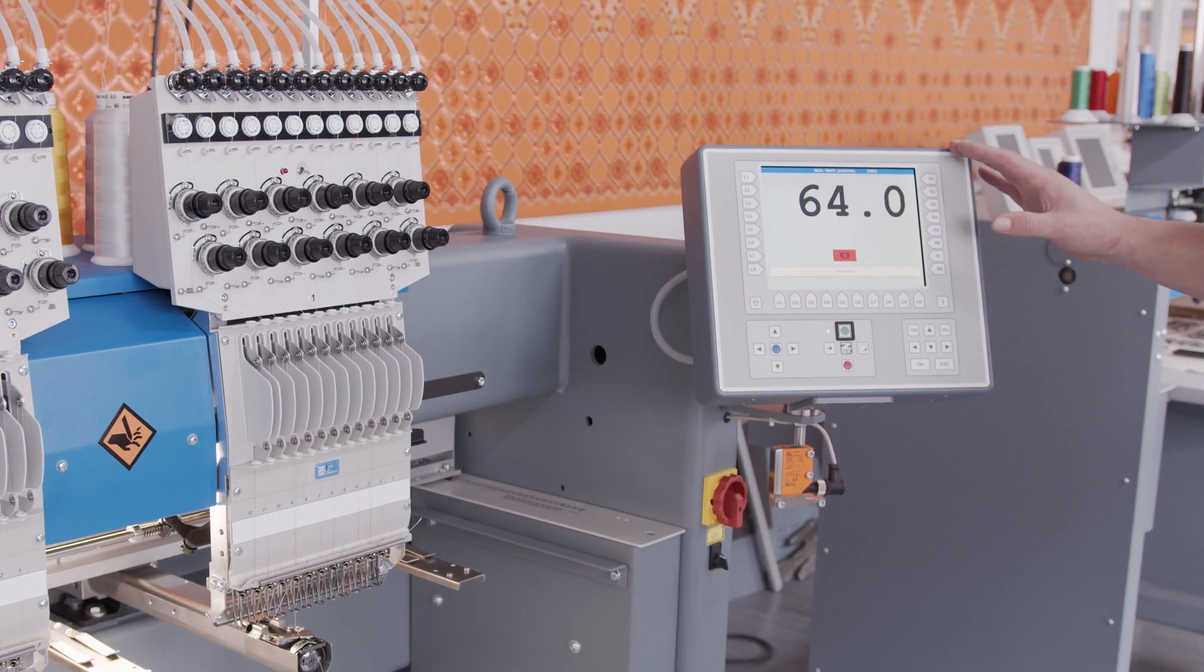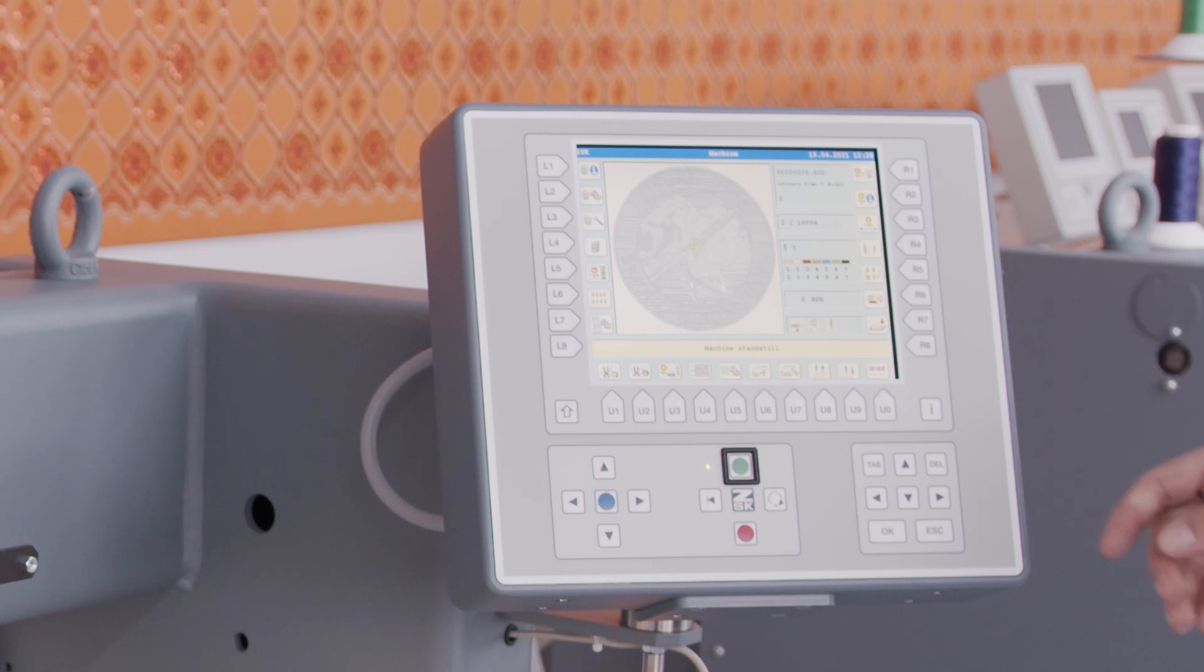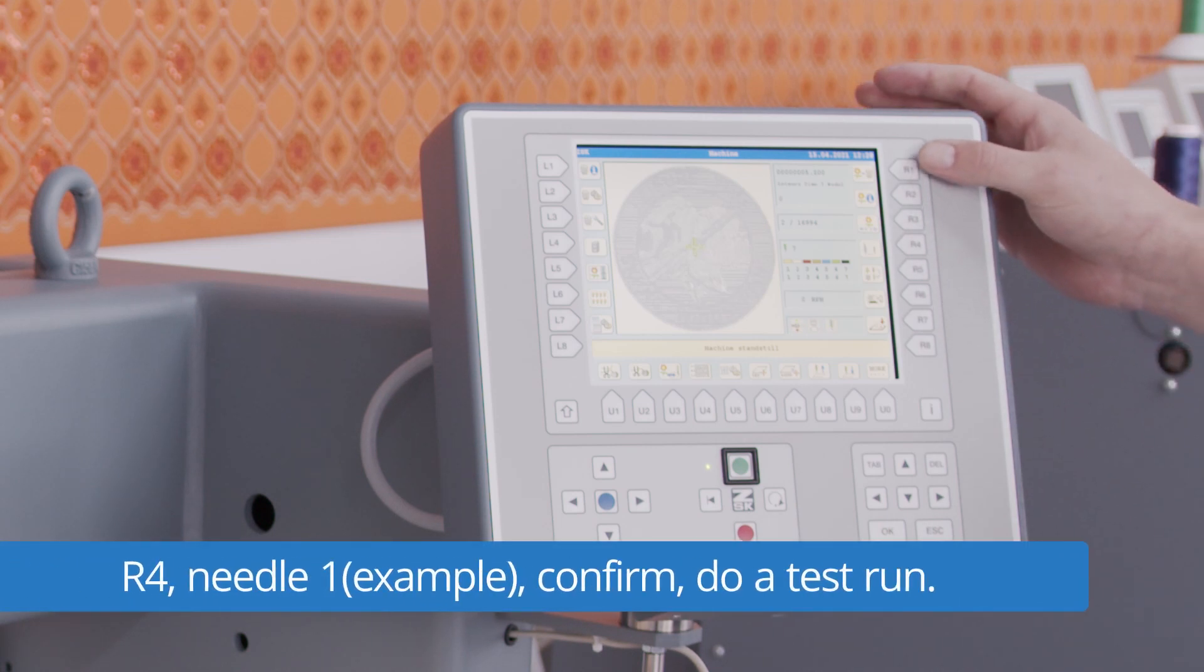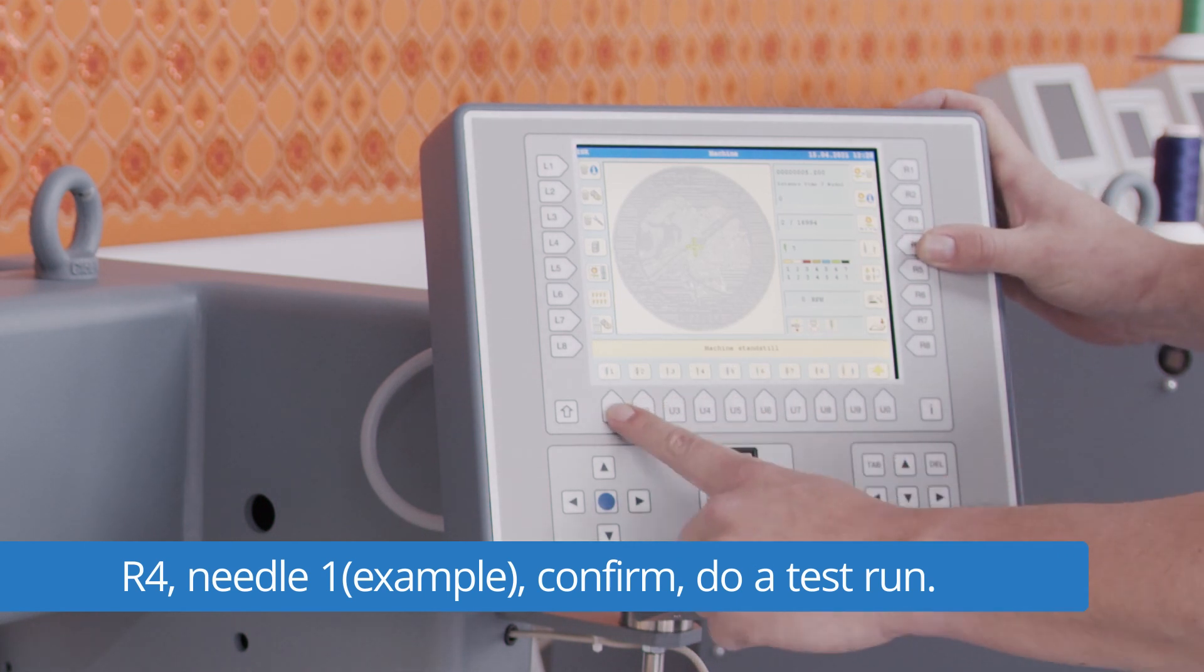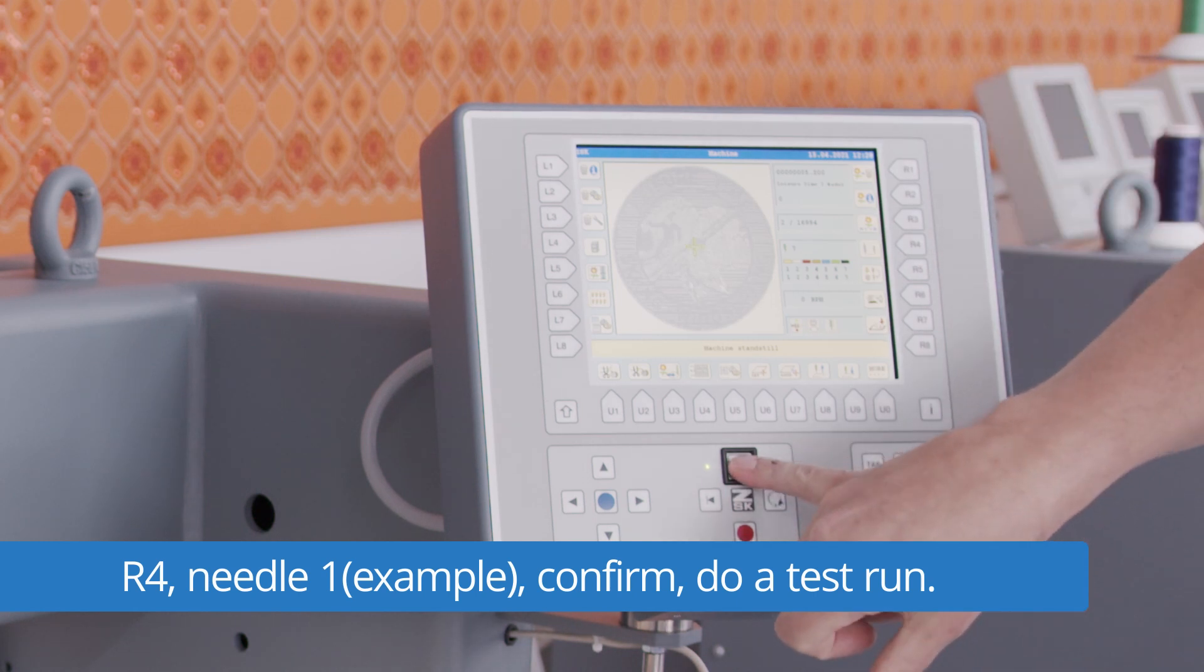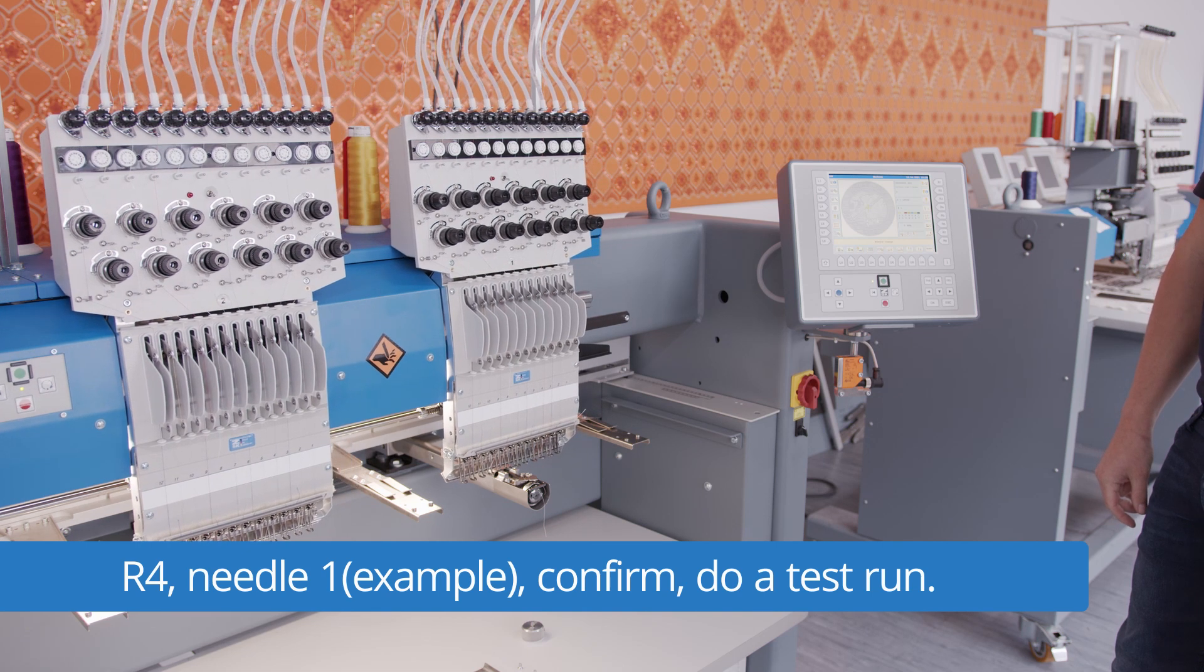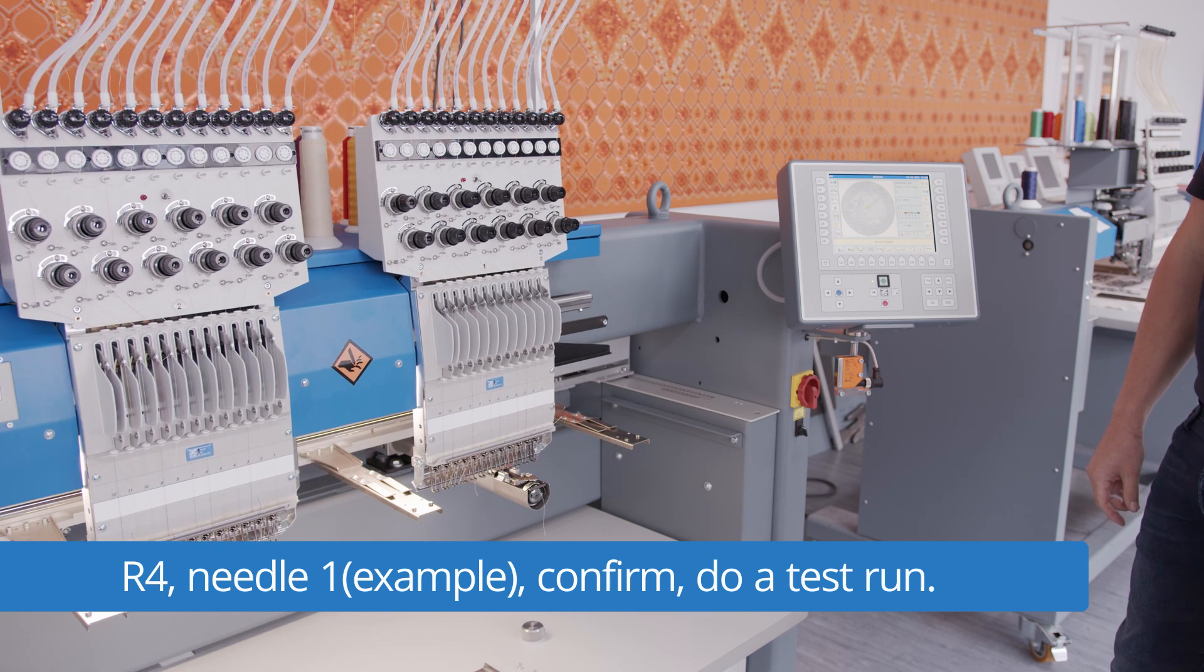After bringing back the machine to the stop position we have to quit the menus and go back to the main screen. Here we want to try now a needle change. Therefore we push R4. Choose any other needle. We are taking one for example and confirm with the green button. The machine will do a needle change. The problem is solved.